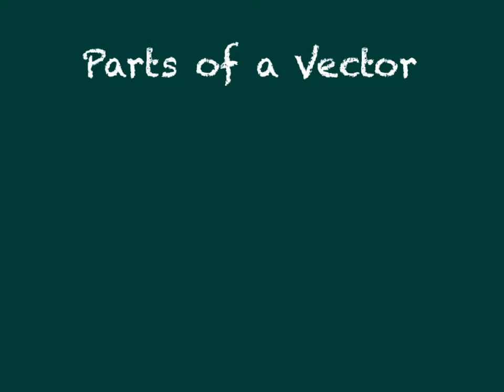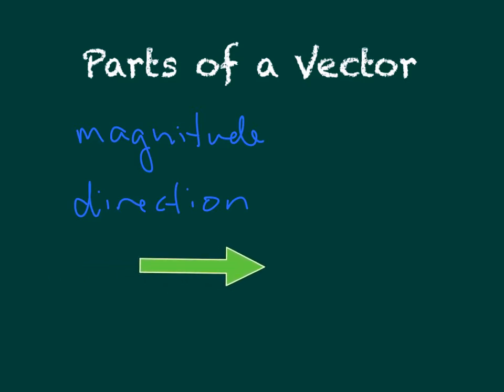When we're talking about the parts of a vector, we're going to talk about magnitude, which is how big a vector is, and we're also going to talk about direction. If you wanted to show a vector, and in this class we're going to show them a lot, we're going to be using arrows. If you have an arrow right here, that's one vector. It points to the right, and its magnitude is how big it is.